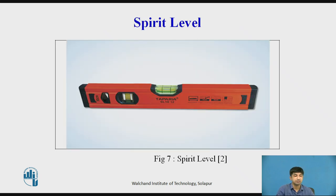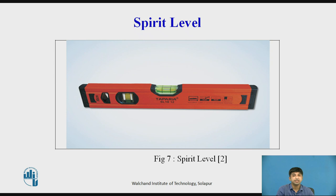Spirit Level. A spirit level has a sealed glass tube, ground on its inside surface to a convex form with a large radius of curvature R. The tube is almost completely filled with ether so that only a small volume remains at the top, which contains ether vapor in the form of a bubble.